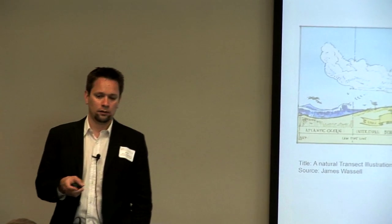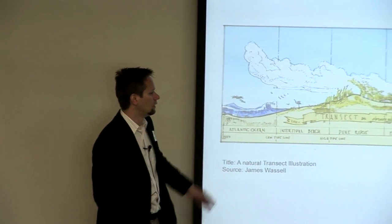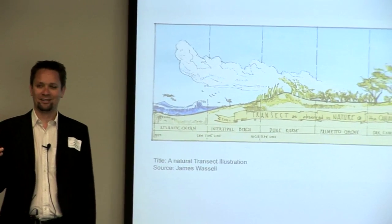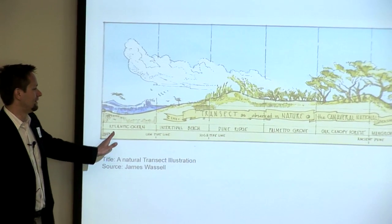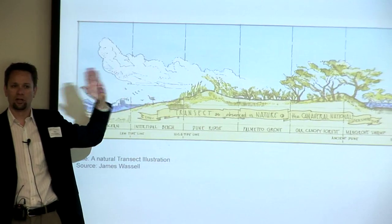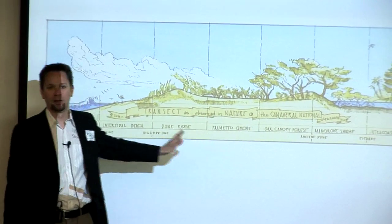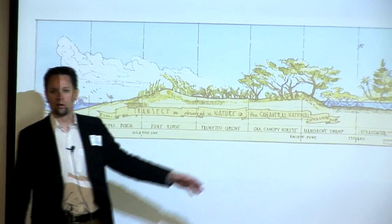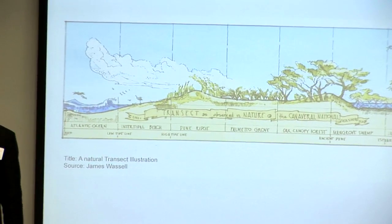The idea essentially evolved from landscape design and ecology. The basic idea is that if you were to cut a slice through nature, you would find these different environments — it might be the beach, or the dune, or the grove, or the forest. In the Midwest, we'd have a sort of different slice of nature that you come through.